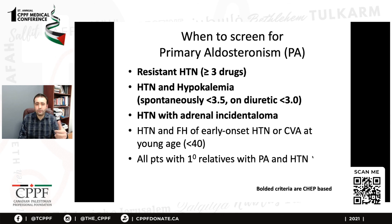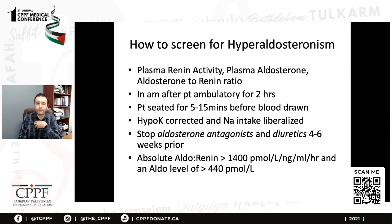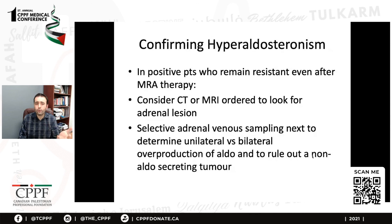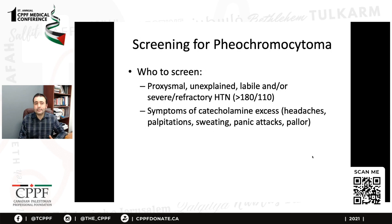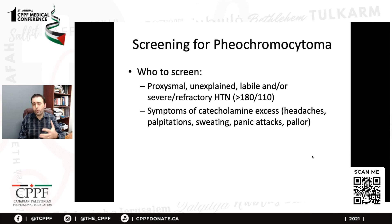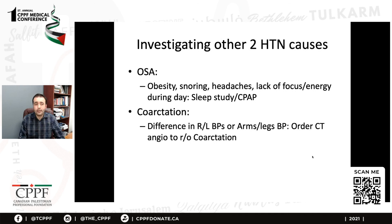For primary aldosteronism, think about this condition if you have resistant hypertension with hypokalemia especially, or if an adrenal incidentaloma is found on CT done for another reason. You can send the patient for plasma renin activity and aldosterone levels, as well as an aldosterone-to-renin ratio. You can refer a patient you're considering for hyperaldosteronism to an endocrinologist for further workup. For pheochromocytoma, screen in situations of paroxysmal, unexplained, labile, or severe refractory hypertension, and if you have symptoms like headaches, palpitations, sweating, panic attacks, or pallor — send them for 24-hour urine catecholamines.